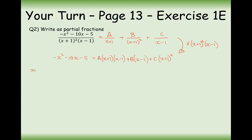Now I can substitute sneaky values of x. Let's substitute x equals 1 — using my calculator I get minus 16 on the left. This cancels the A and B terms, leaving just the C term: (1+1)² equals 4, so 4C equals minus 16, giving C equals minus 4. Now substituting x equals minus 1, I get 4 on the left. This cancels the A and C terms, leaving minus 2B, so B equals minus 2.